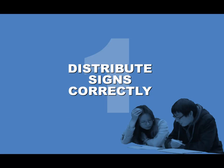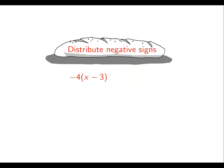Let's start with the often tricky issue of making sure you keep track of the signs when you distribute terms amongst brackets. Here's a simple example here, minus 4 multiplying x minus 3.